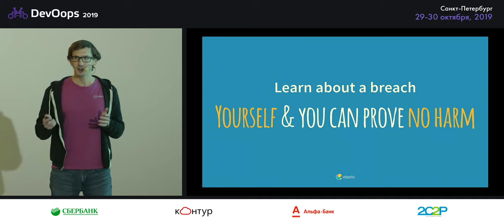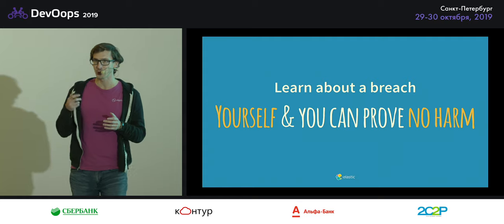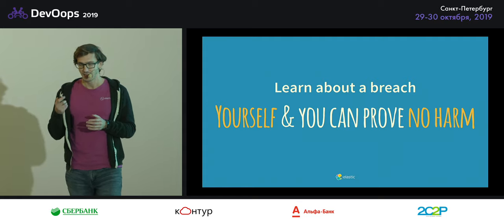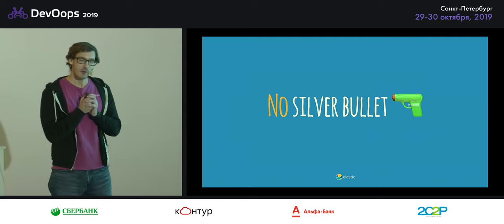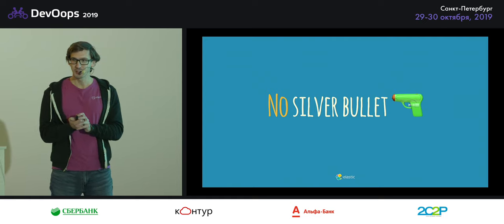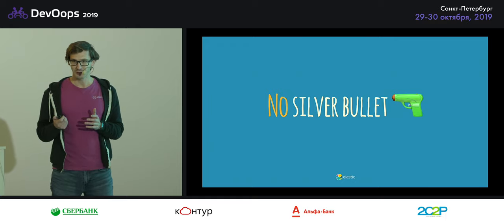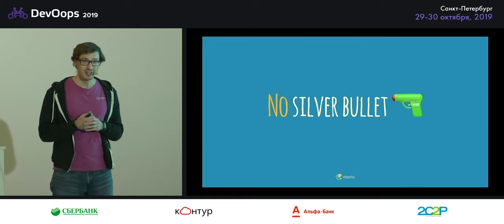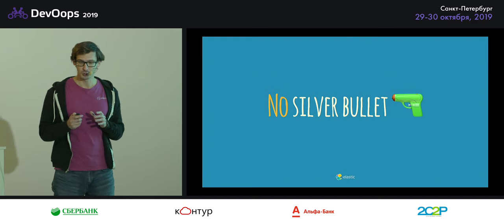We want to basically see if something has happened, find out that it has happened, and then be able to prove what the attacker did and what that means for our systems and data. With things like GDPR in Europe, it's getting more and more important to know what people are doing and what is broken. Obviously, there are no silver bullets — no single tool can promise to deliver exactly what you need.